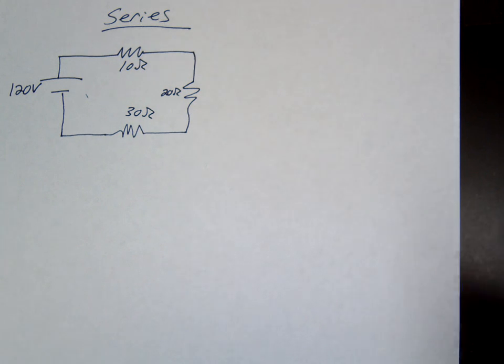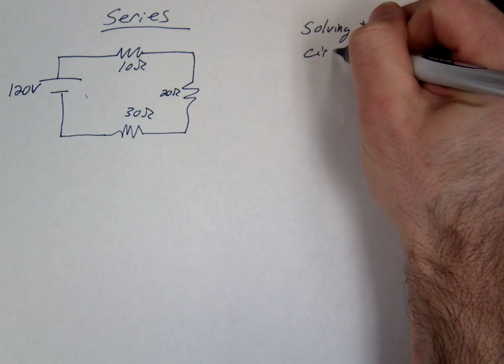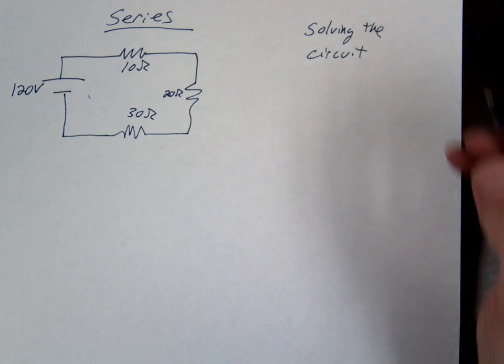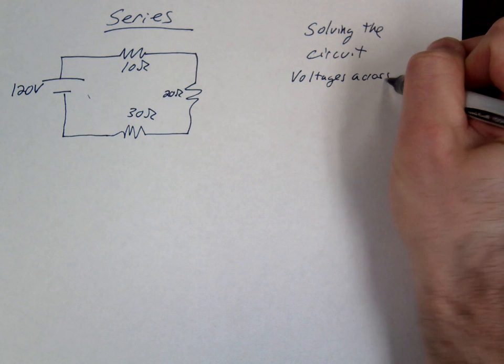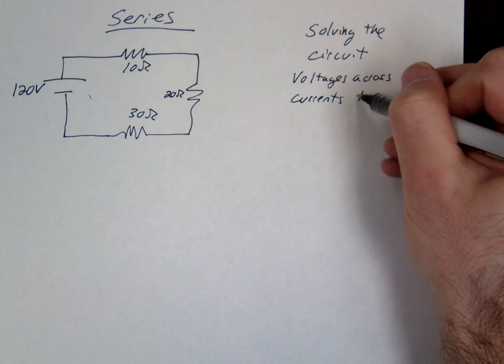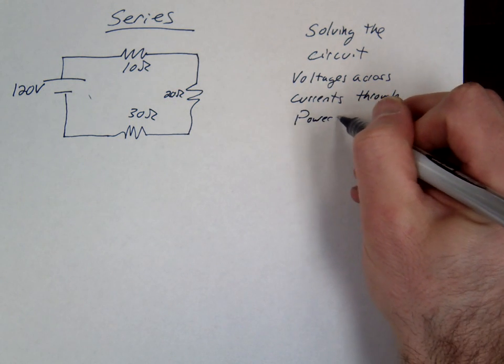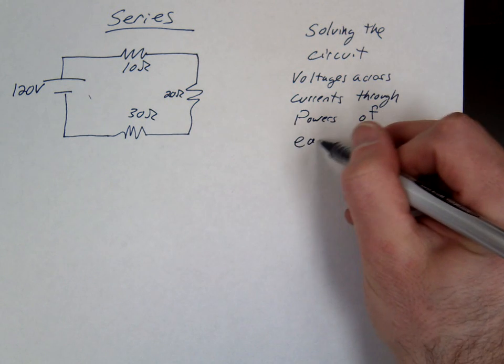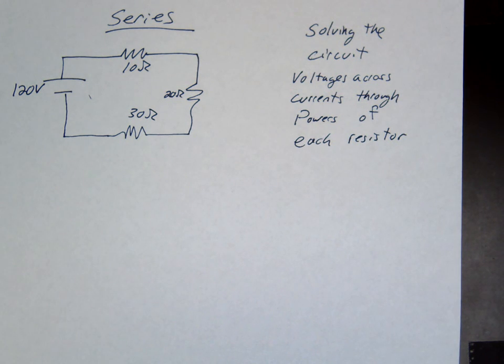What I am going to ask you to do is what I refer to as solving the circuit. When I say to solve the circuit, what I want you to do is to calculate the voltages across, the currents through, and the powers of each resistor. Now we just did that with the warm-up with that simple single resistor circuit. You found all those things. So you can do it with one. Now we are going to see how do we do it with multiples.